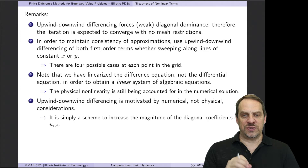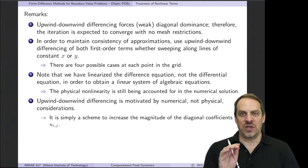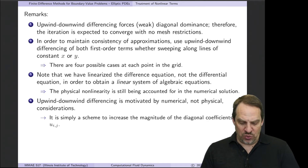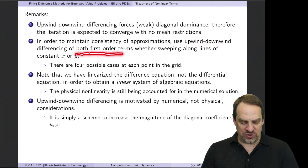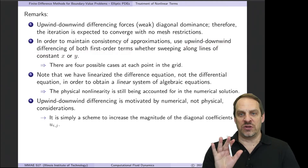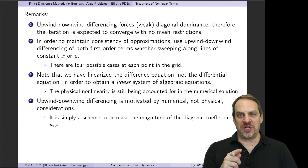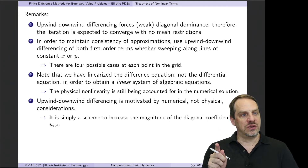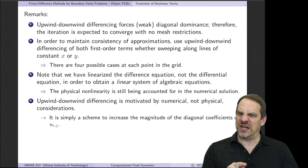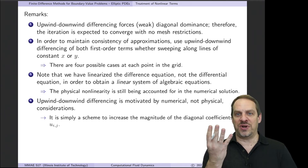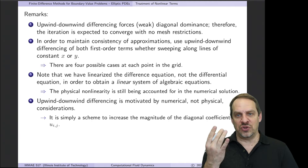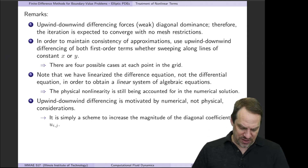In terms of applying this, the goal is to enhance diagonal dominance. To be consistent, we apply upwind-downwind differencing in both first-order terms regardless of direction, giving us four different possibilities based on the signs of U and V: U positive/V positive, U negative/V positive, U negative/V negative, and U positive/V negative — all four combinations of U and V being positive and negative.